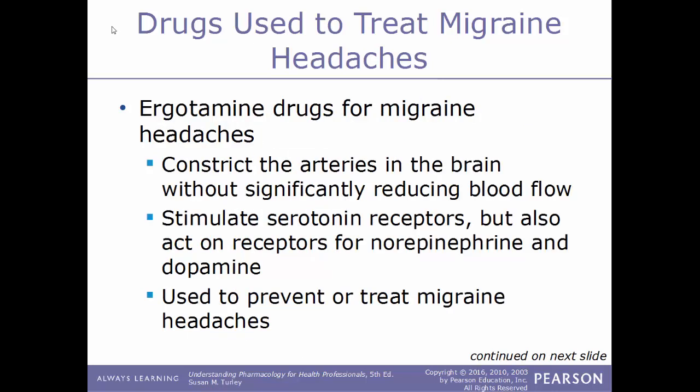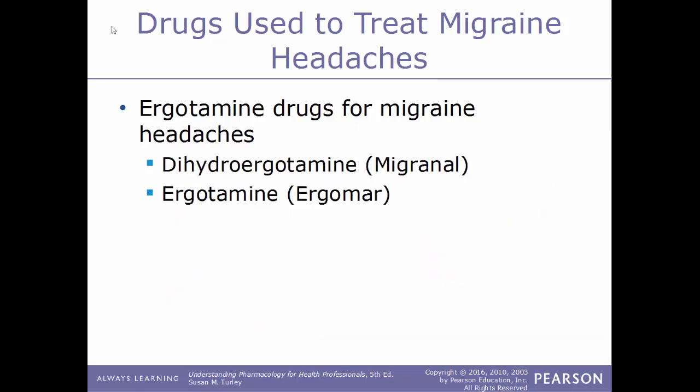Another class of drugs used to treat migraines are ergotamine drugs. These work by constricting the arteries in the brain without significantly reducing blood flow. They act by stimulating serotonin receptors but also act on receptors for norepinephrine and dopamine. These are used to prevent or treat migraine headaches. Examples include dihydroergotamine, also known by the brand name Migranal, and ergotamine, sold under the name Ergomar.